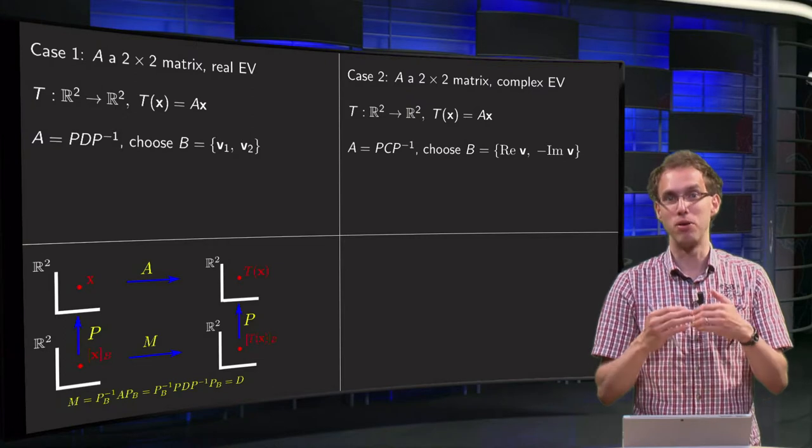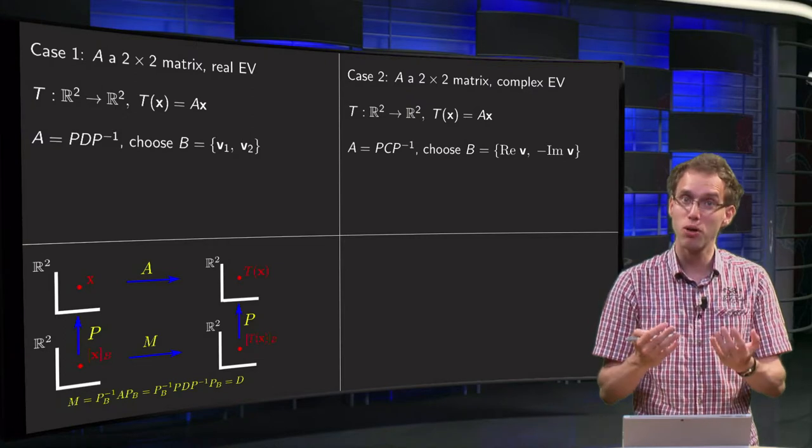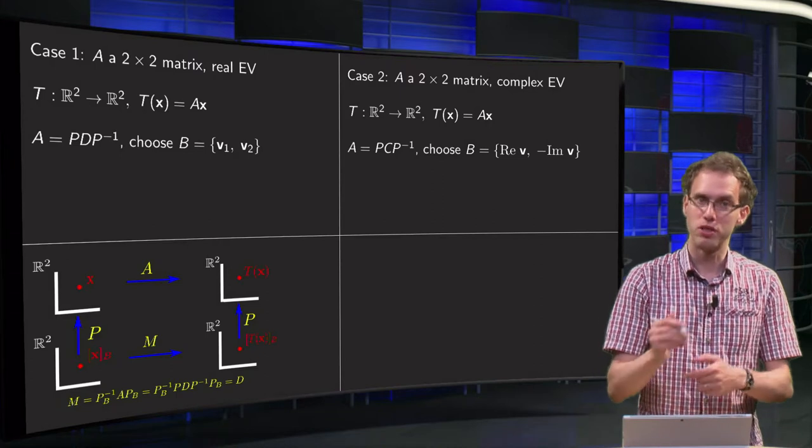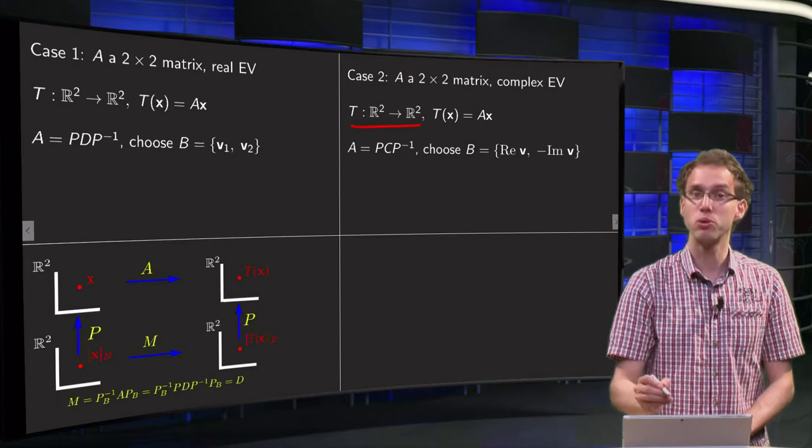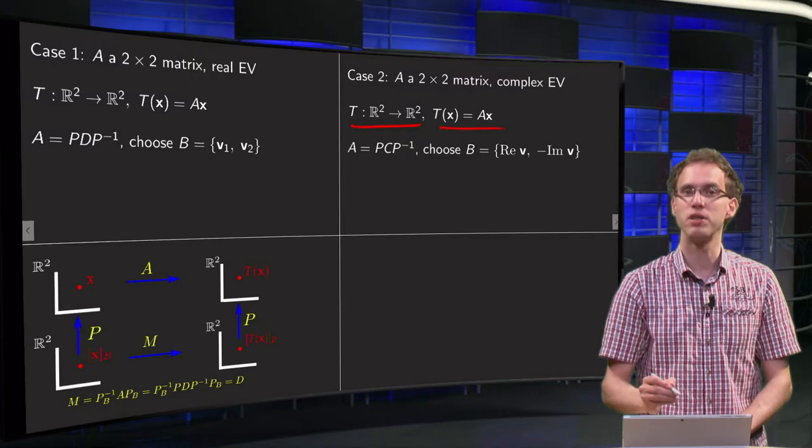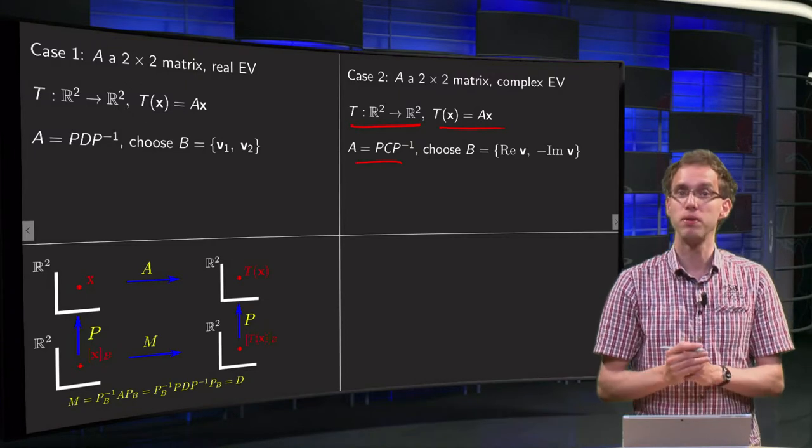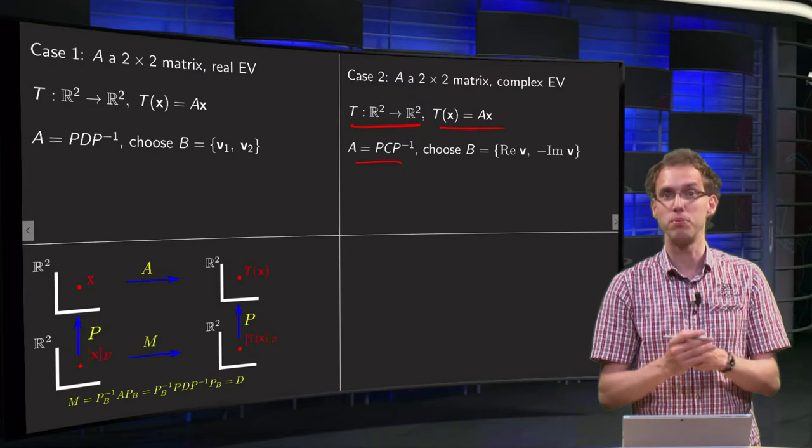Let's look at the second case. Suppose A is a 2×2 matrix but now has complex eigenvalues. Then we can do the same trick: we have our mapping T from R² to R², T(x) equals Ax, and now we know that A equals P times C times P inverse instead of P times D times P inverse.